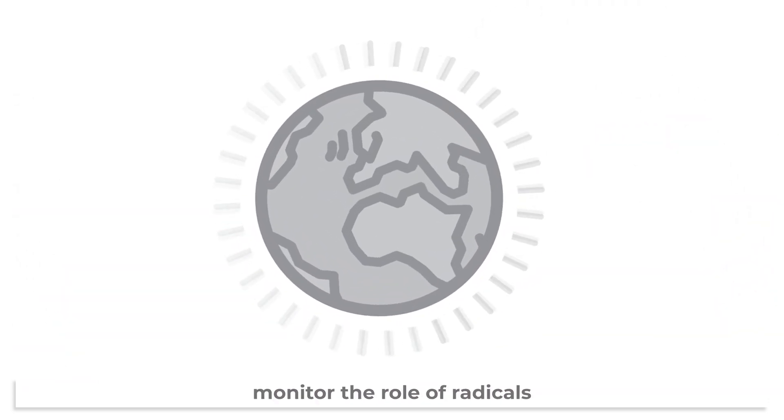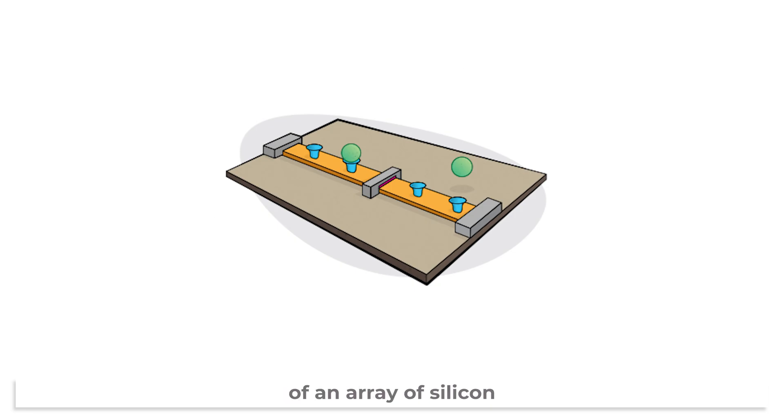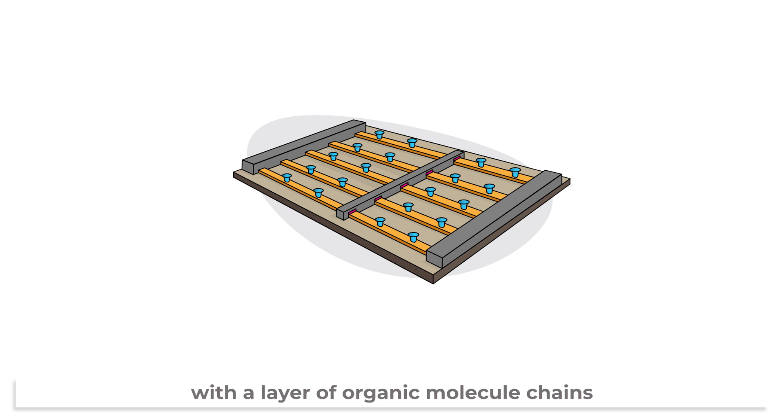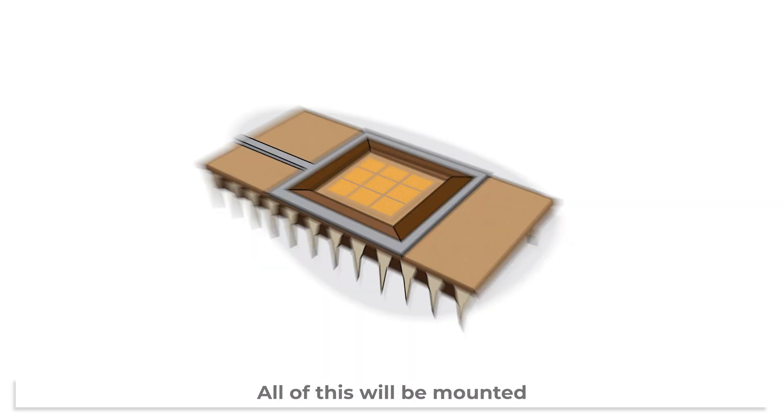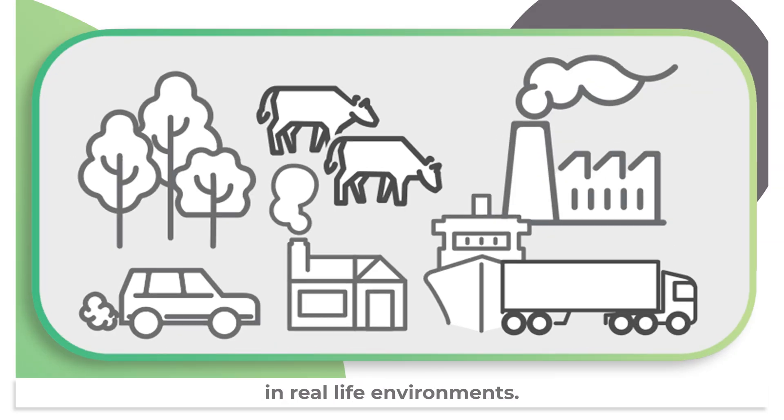to help us better monitor the role of radicals in atmospheric chemistry. This will take the form of an array of silicon nanowire transistors with a layer of organic molecule chains and will selectively react with atmospheric radicals. All of this will be mounted on a chip for easy packaging and deployment in real-life environments.